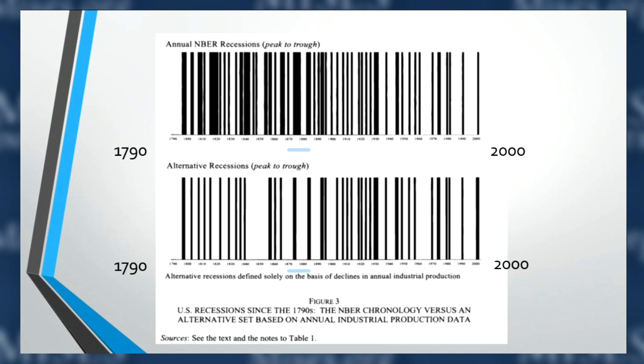However, here is the alternative recession dating created by Joseph Davis, who created a new continuous industrial production series from about 1792 and used it to date recessions — how long did the economy actually contract before recovering? Just look at the enormous difference. What looked like a giant depression is now gone. And in the 1870s, while the NBER said it lasted from 1873 to 1879, Joseph Davis shows the depression lasted only from 1873 to 1875. Many entire periods show no overall macroeconomic recessions.